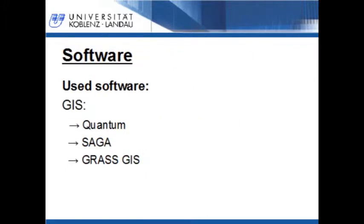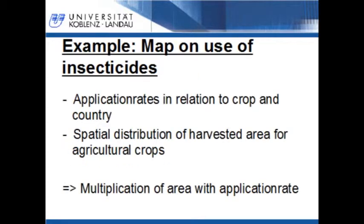These contamination maps can be generated with open source software. I use the open source GIS tools Quantum GIS, SAGA, and GRASS. The used software is open source and can be downloaded for free from the internet. I will show you an example of how such contamination maps, in this case for insecticides, can be generated. This method can also be used for other substances.